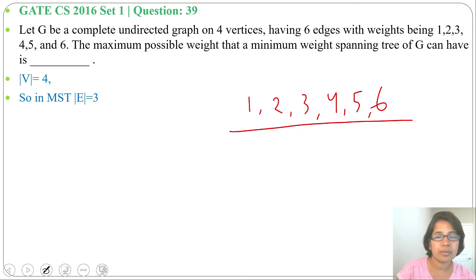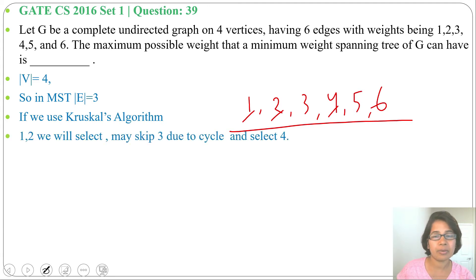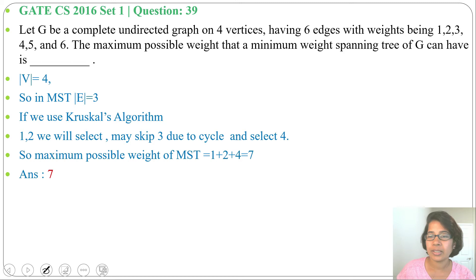So first we'll choose 1, next we'll choose 2, then we may skip weight 3 if it is creating a cycle, and we may choose weight 4. In 2 edges we cannot create a cycle; for a cycle at least we need 3 edges. So 1, 2 we'll choose, 3 we may skip, and we'll choose 4. So maximum possible weight of minimum spanning tree will be 1 plus 2 plus 4 equals 7. Answer will be 7.